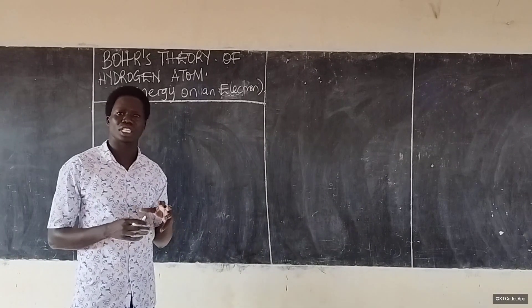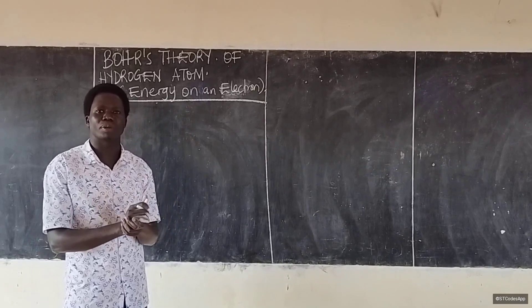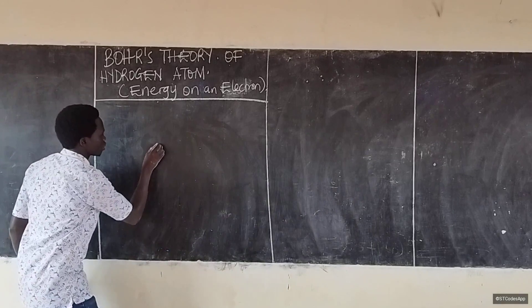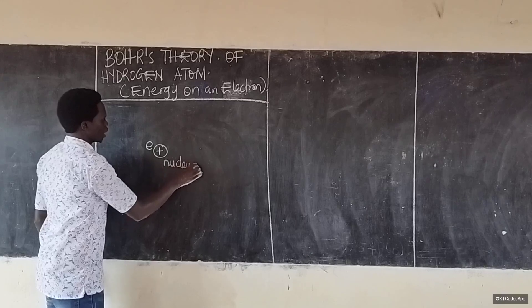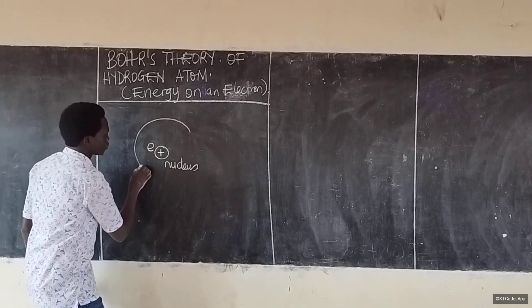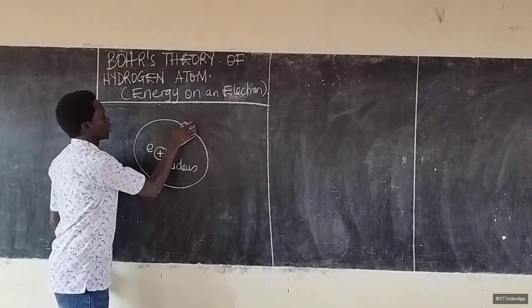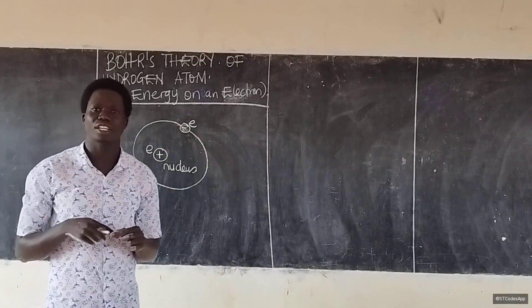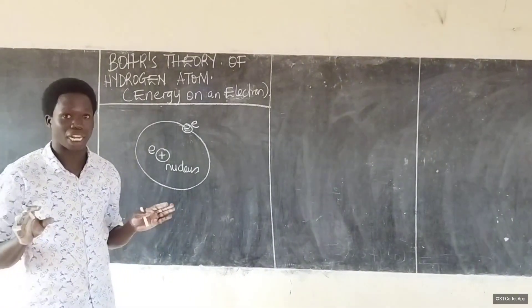A Bohr atom is one which has a nucleus that is positively charged, and around it there is an electron orbiting the nucleus. This electron always evolves around the nucleus in what we call allowed orbits — not any other orbit, but only in allowed orbits.